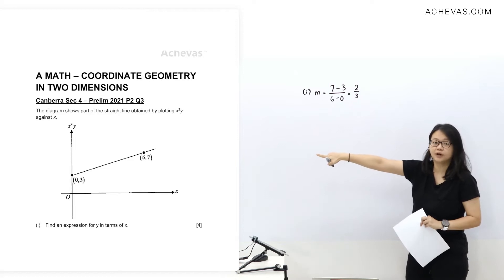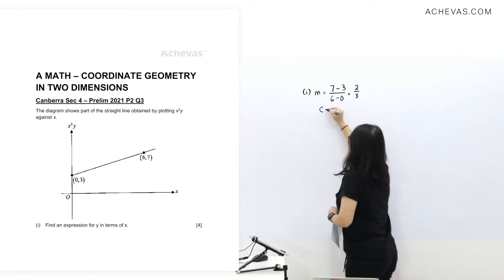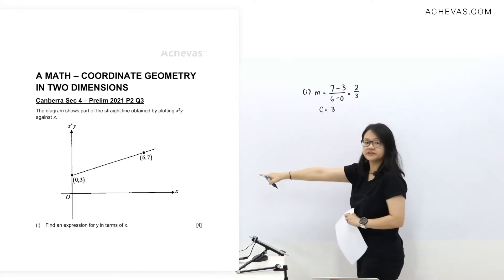Second, we already can see that the y-intercept is going to be 3 over there.